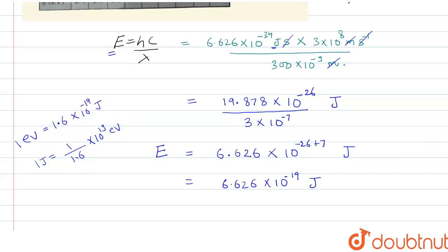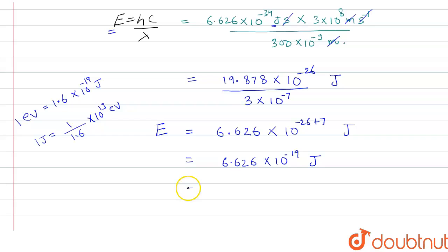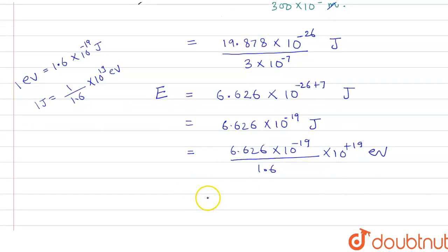Here we will divide 6.626 × 10^-19 by 1.6 × 10^-19. This will be in electron volt. When we calculate this value, it comes out to be 4.141 electron volt. The energy will come out to be this.